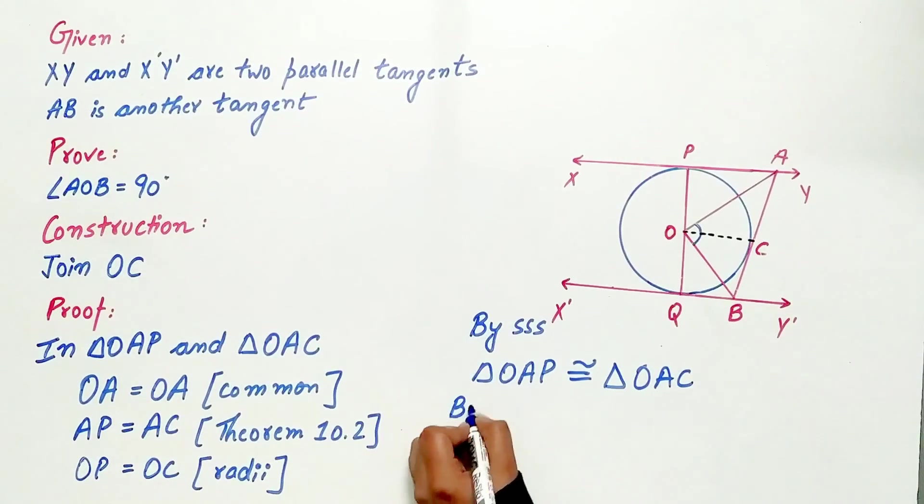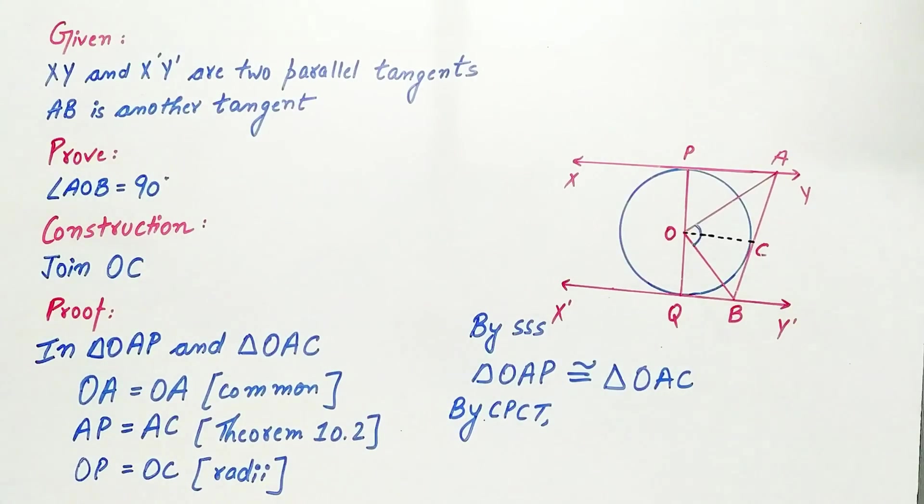And by CPCT, that is corresponding parts of congruent triangle, angle OAP is equal to angle OAC.